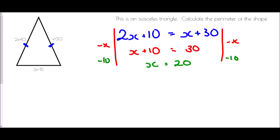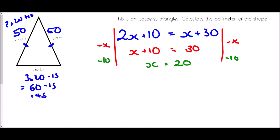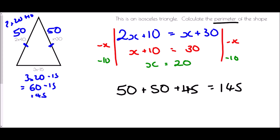Now we know x = 20, we can find each side. Side 1: 2x + 10 = 2 × 20 + 10 = 40 + 10 = 50. Side 2 is equal to that: x + 30 = 20 + 30 = 50. Side 3: 3x − 15 = 3 × 20 − 15 = 60 − 15 = 45. The perimeter is 50 + 50 + 45 = 145 (most likely centimeters).